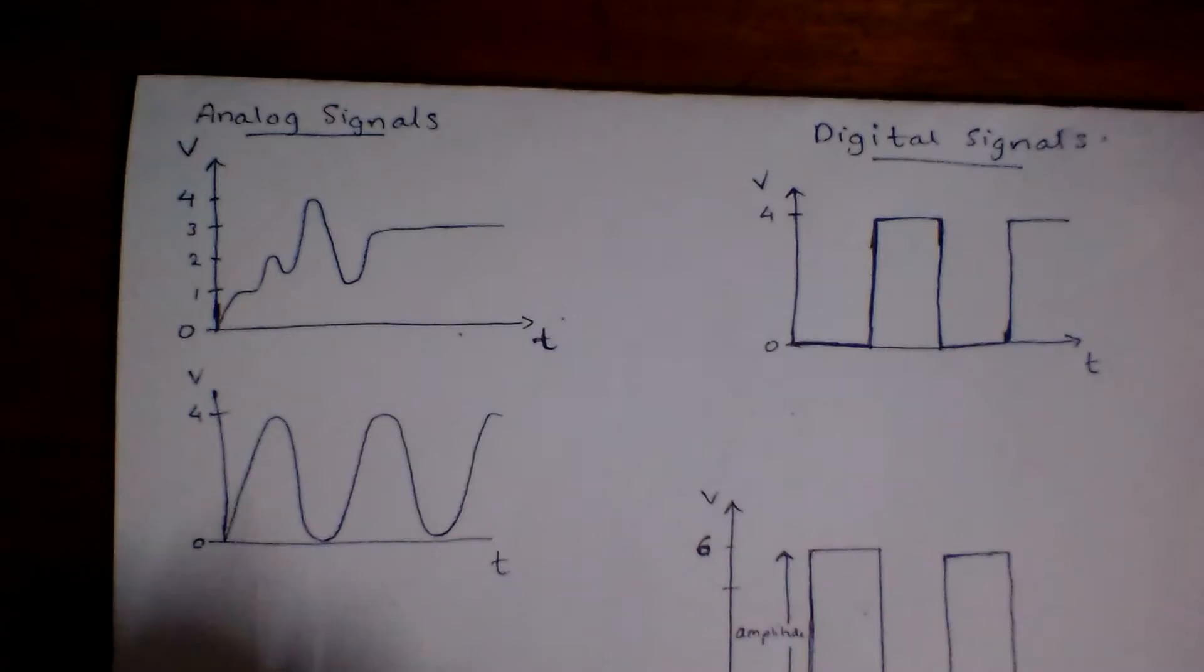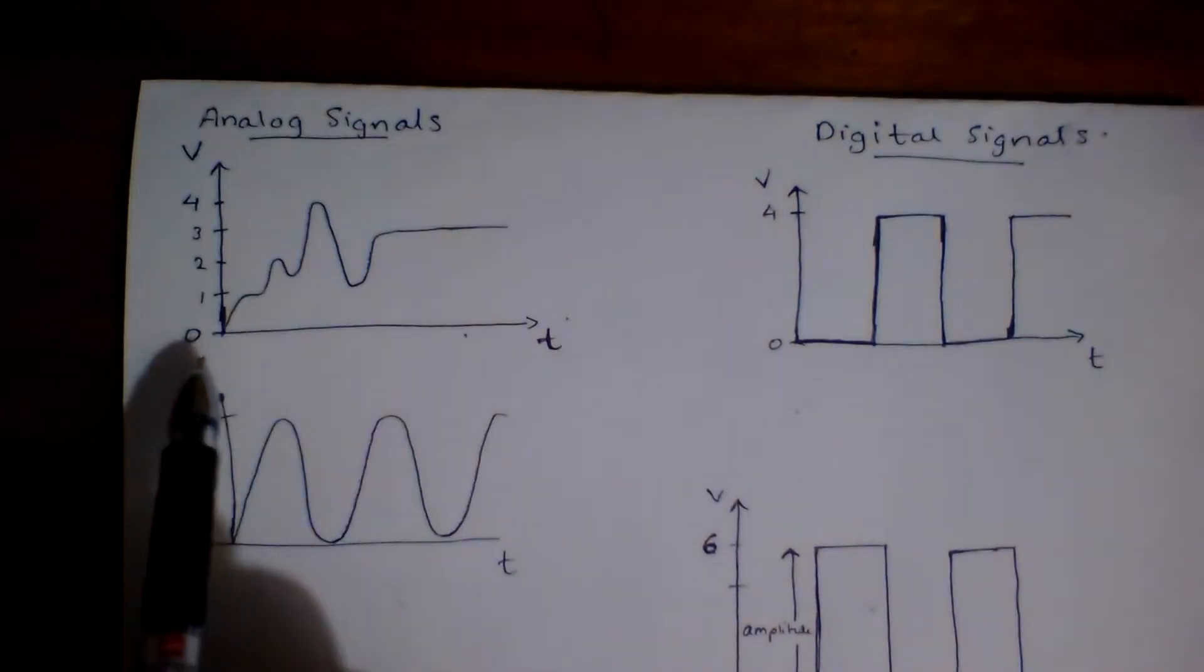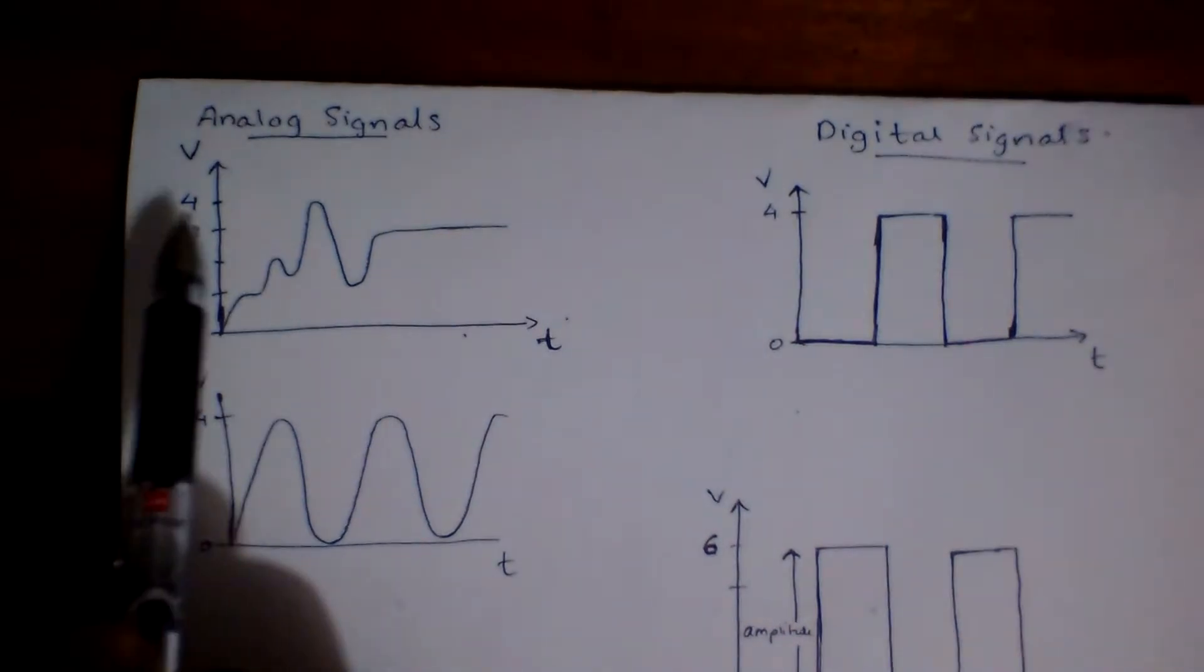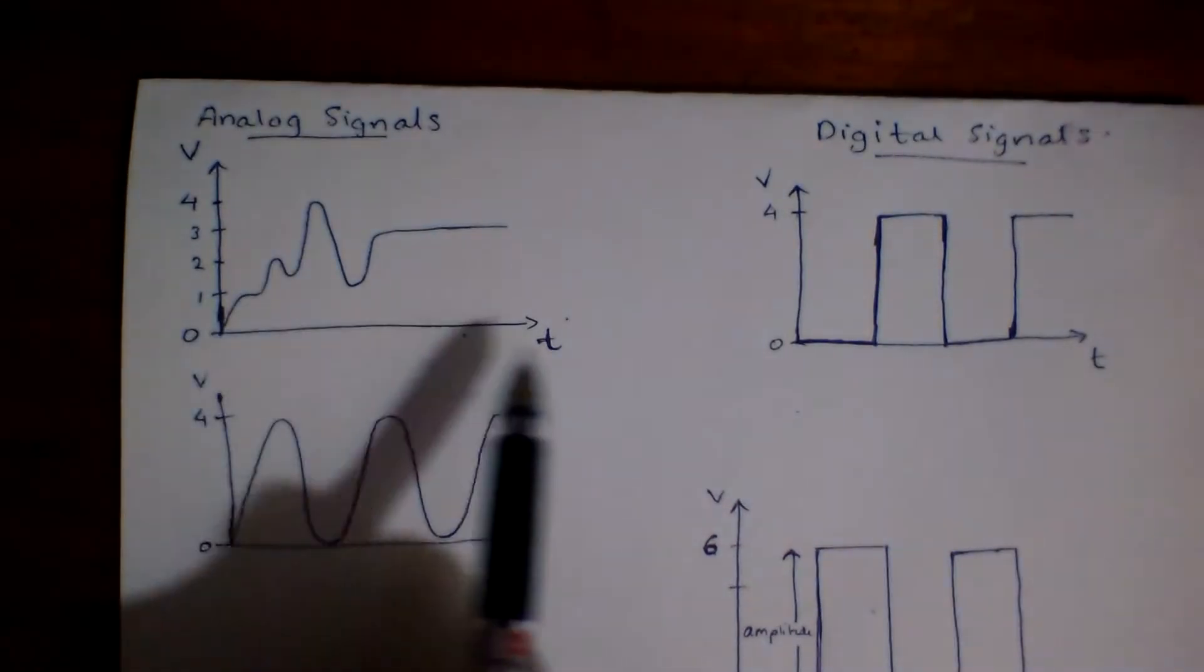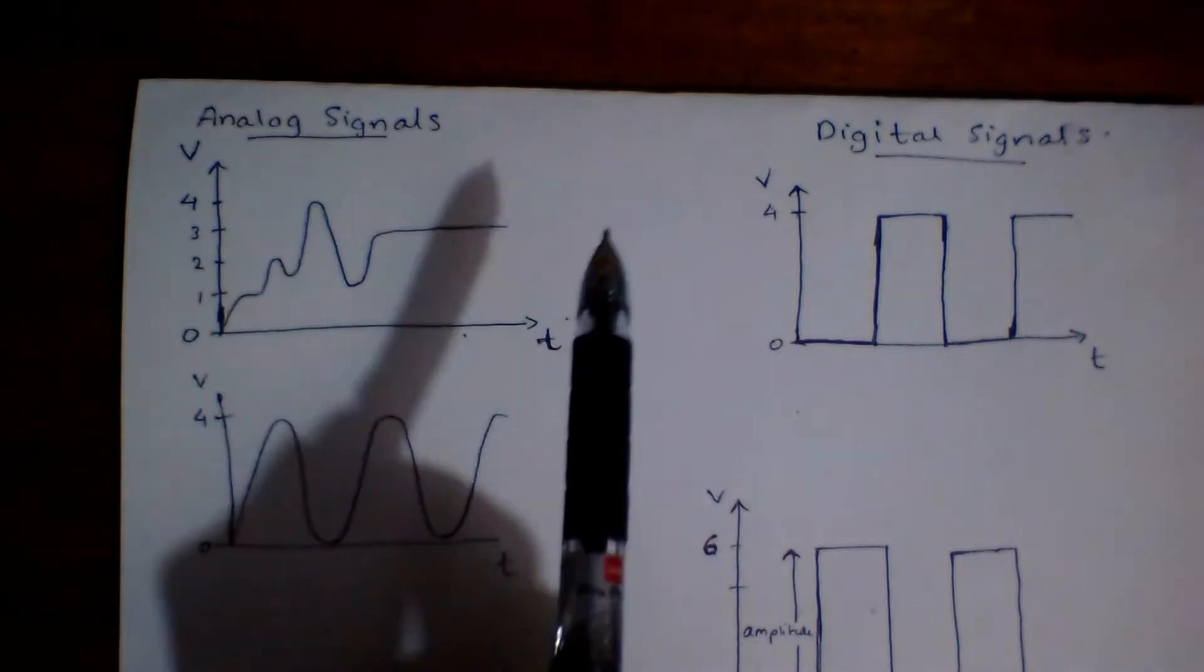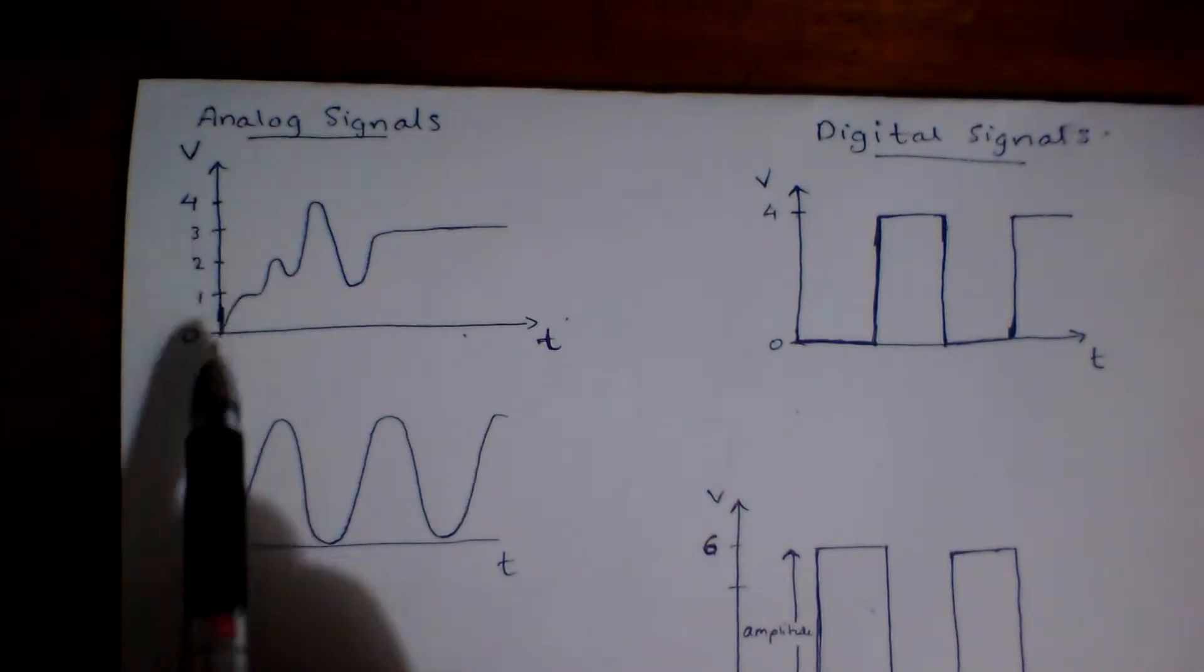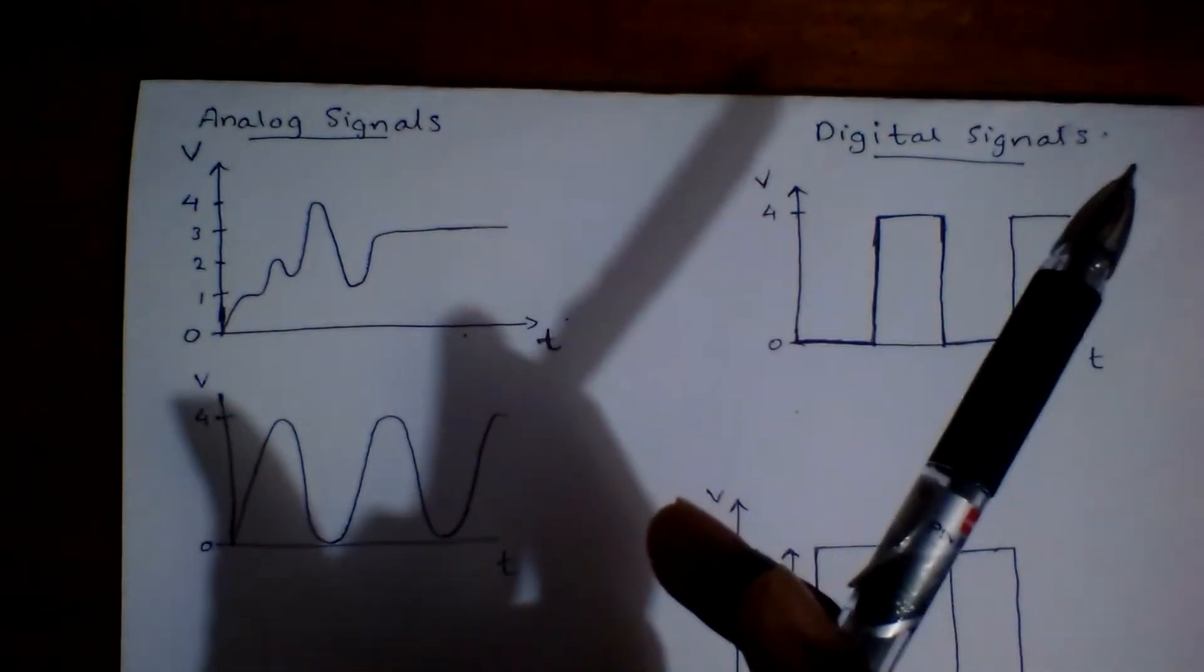Before we learn more about PWM, it's quite good to know a bit about analog and digital signals. What are analog signals? They are nothing but signals which can take any value of voltage between the maximum and the minimum voltage. Say the maximum voltage is 4 and the minimum voltage is 0. It can take any value between 0 and 4. As time varies you could see that as it likes it could take any value. And what does that mean?